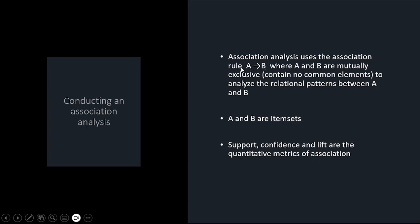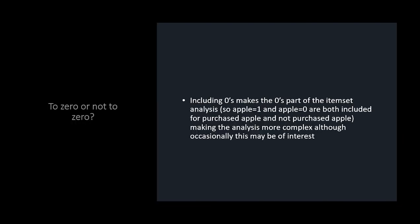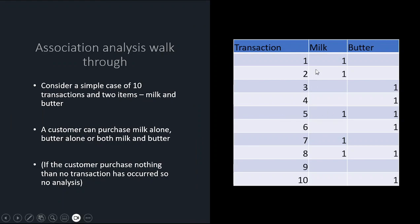I made a simpler 10-transaction milk and butter database myself. The original five-item example was actually too complicated to start with. So I made an even simpler dataset with just milk and butter across 10 transactions. A customer can purchase milk alone, butter alone, milk and butter together, or nothing — but we don't care about people who purchase nothing because there's nothing to associate.